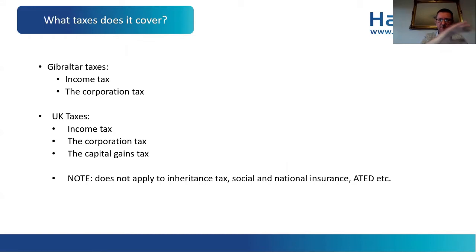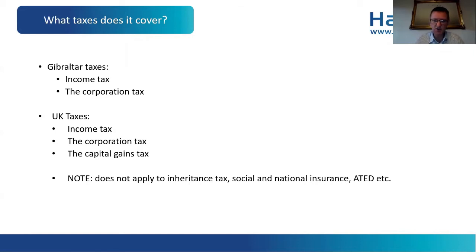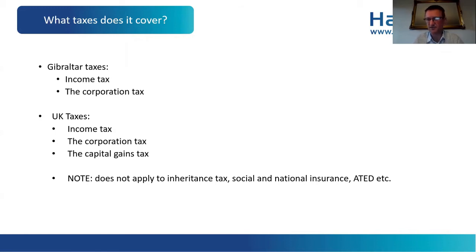What taxes does the treaty cover? In Gibraltar it covers income tax and corporation tax, which are wrapped up in the same legislation. In the UK it covers income tax, corporation tax, and capital gains tax. We need to understand this does not cover inheritance tax in the UK, national insurance, ATAD, the banking levy, SDLT, or any of those other things. It simply covers income tax, corporation tax, and capital gains tax.